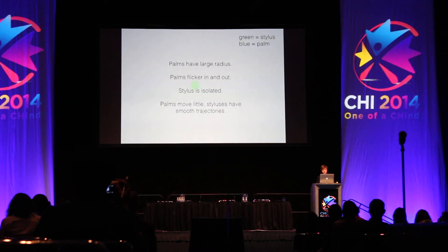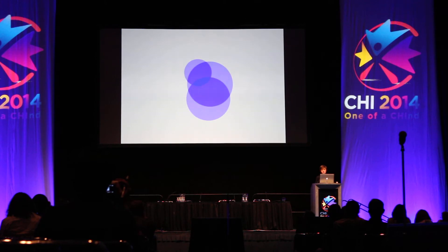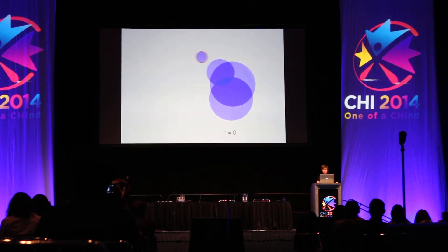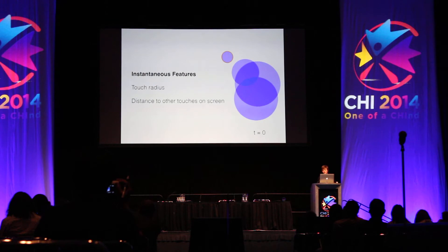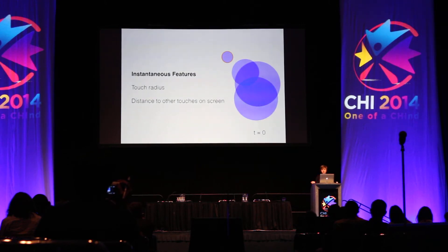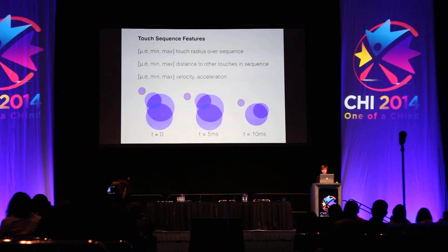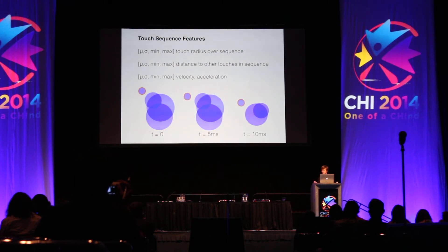From these observations, we developed a set of features. For example, given a set of touches on the screen and a new one that appears, we want to determine whether it's a palm or a stylus. Rather than just building a couple of features and classifying immediately, we found you can do much better if you wait and look at how these touches change over time — computing statistics over how radius and distance to other touches evolve.